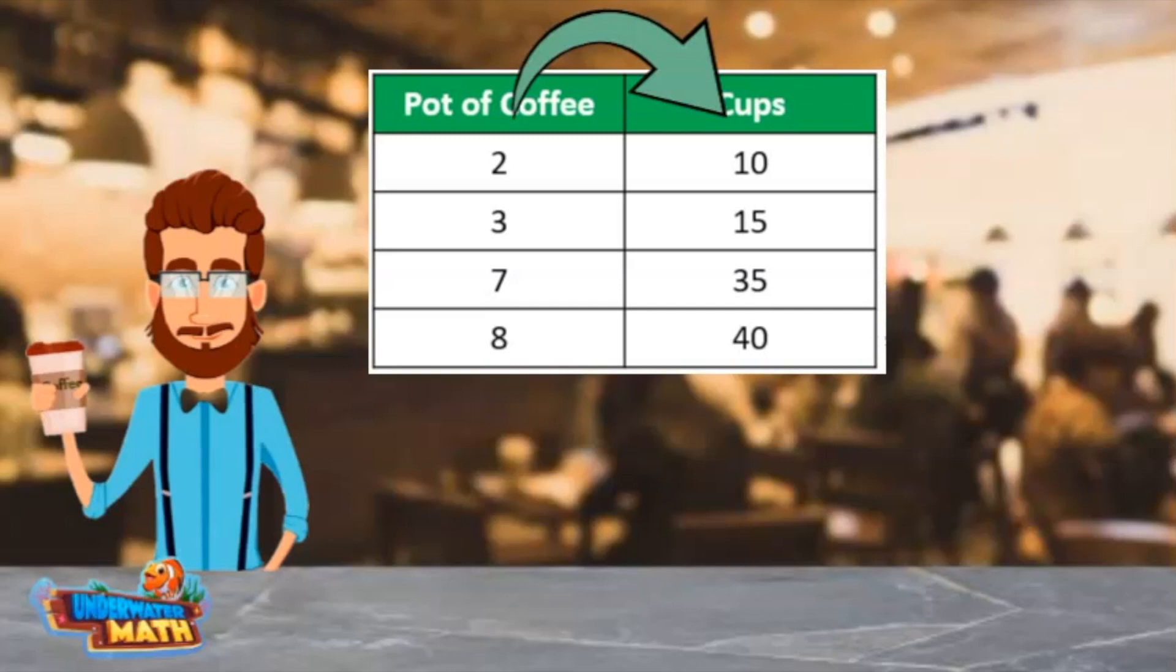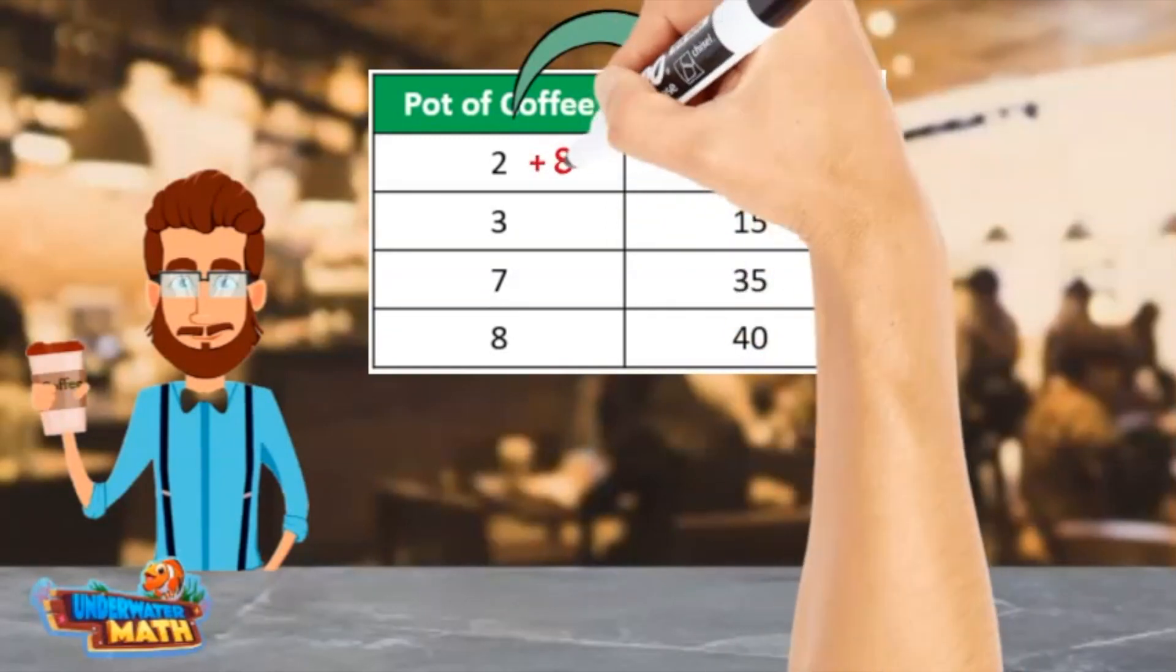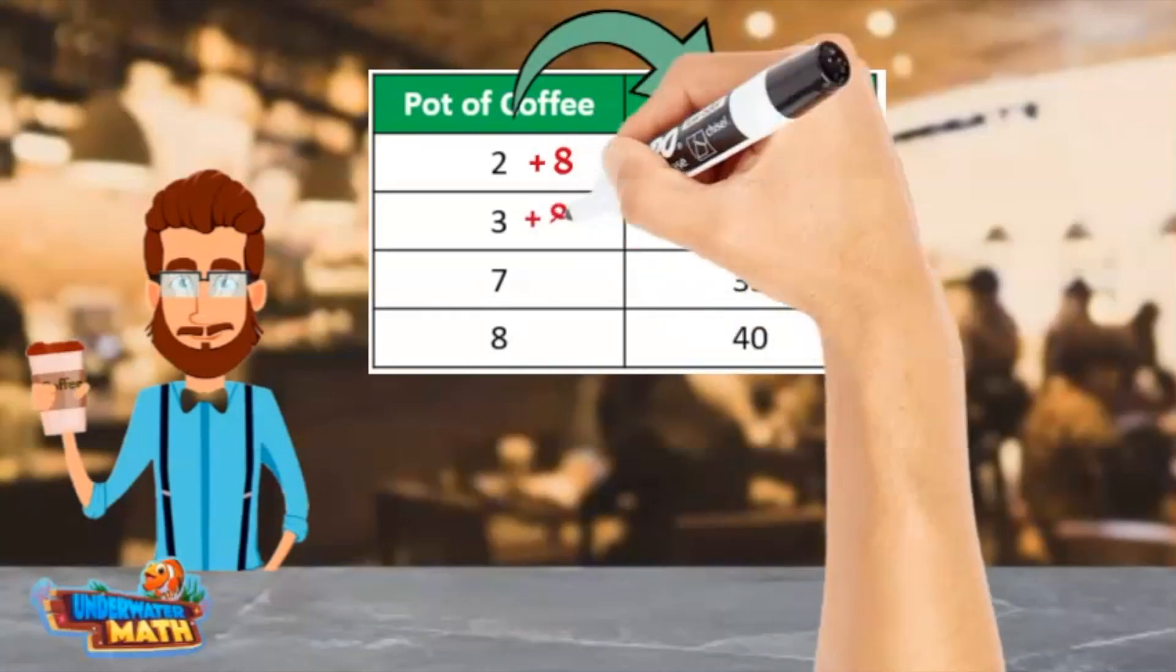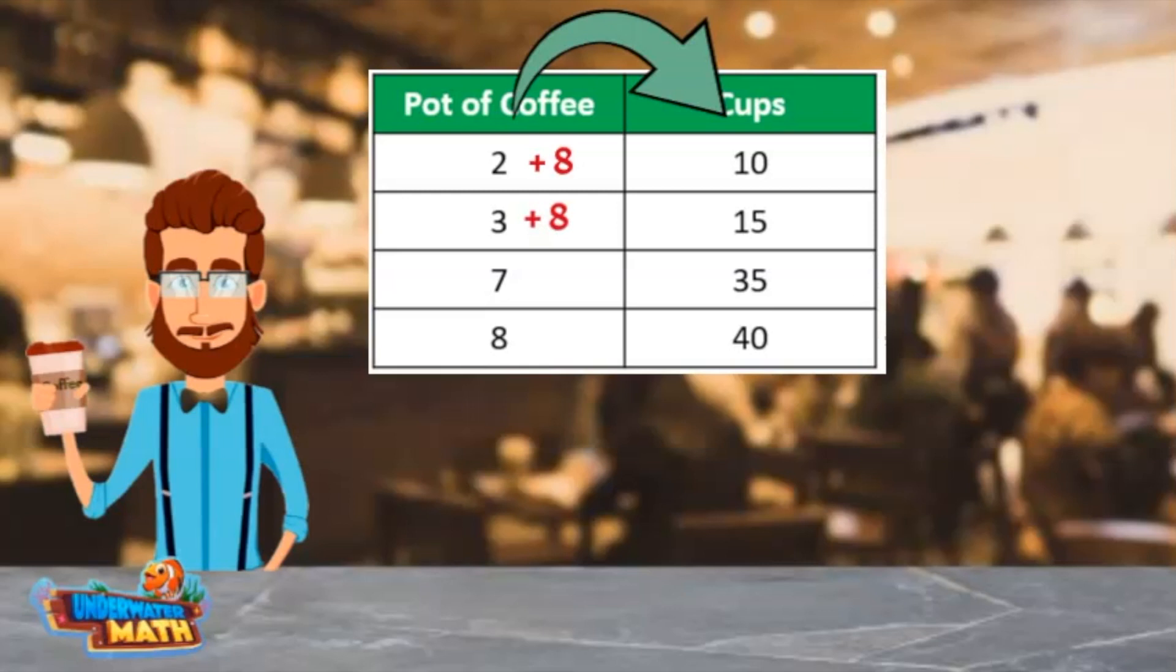Two batches make 10 cups. The number is increasing, so I need to add or multiply. I am going to try adding first. 2 plus 8 equals 10. I am going to see if plus 8 works for the second row. 3 plus 8 equals 11. Plus 8 doesn't work here.